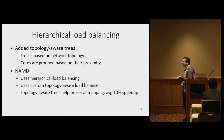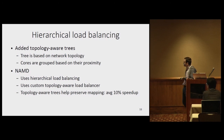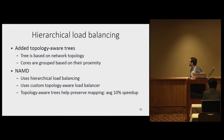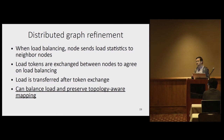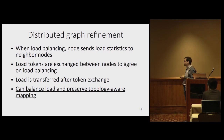For hierarchical load balancing, NAMD uses hierarchical load balancing and also has its own custom topology-aware load balancer. We added topology-aware trees for the hierarchy, achieving a 10% speedup. For distributed load balancers, we have a new load balancing strategy based on graph refinement, where nodes exchange information only with neighbor nodes, so load balancing is done based on only local information. This is a very scalable strategy that also preserves topology-aware mapping.